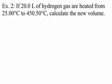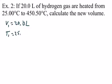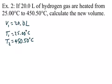In this problem, you have 20 liters of hydrogen — that's the initial volume. You're heating it from 25 to 450.5 degrees Celsius, so the original temperature is 25°C and the new temperature is 450.5°C. They want us to calculate the new volume. Notice pressure is not even mentioned — this is a Charles' Law problem.